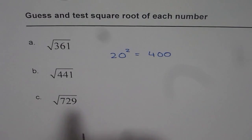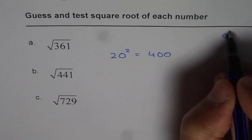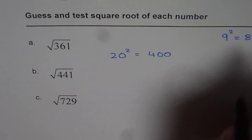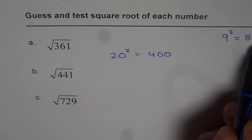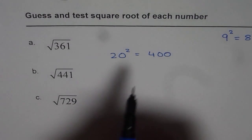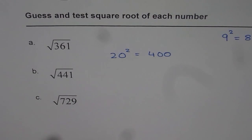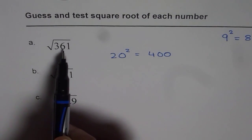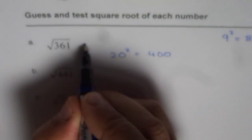Now think about this. For square root of 361, my guess for 361 is the number 19.